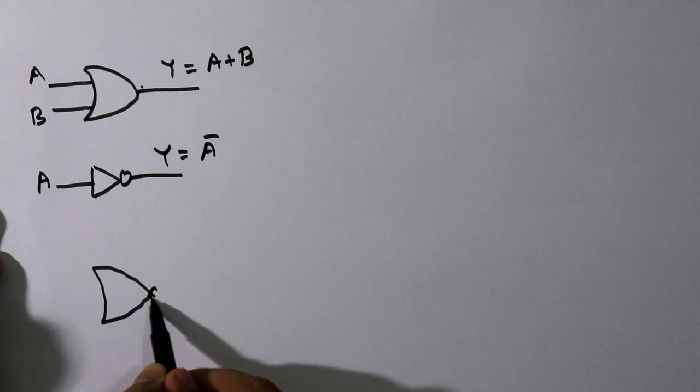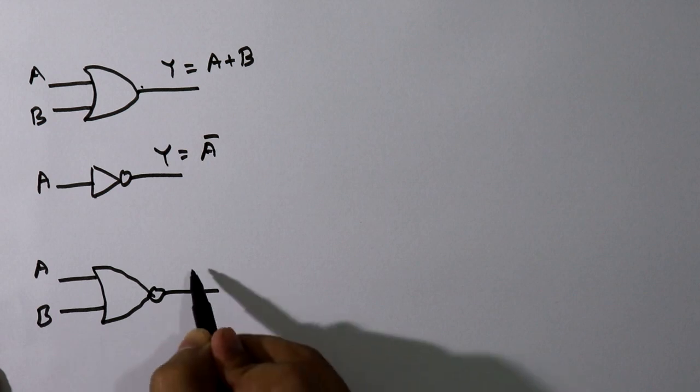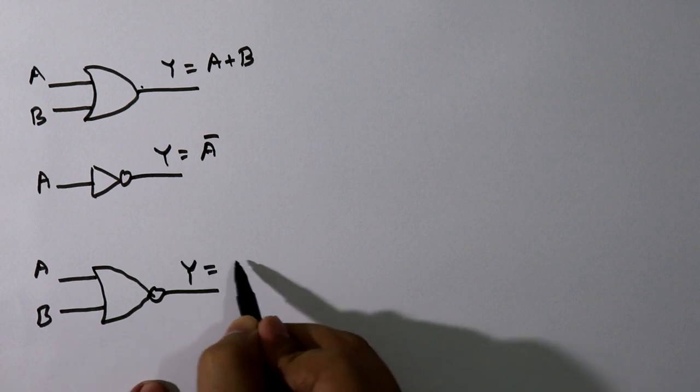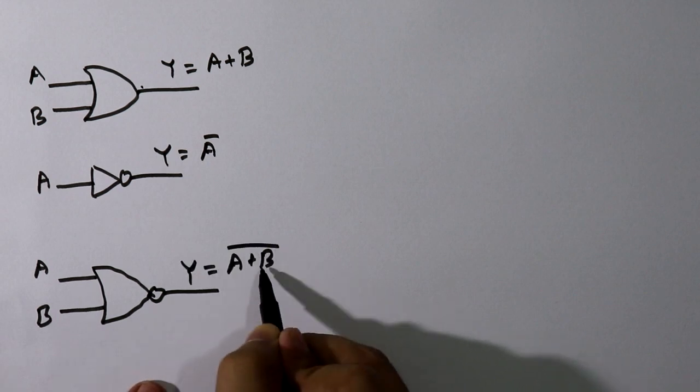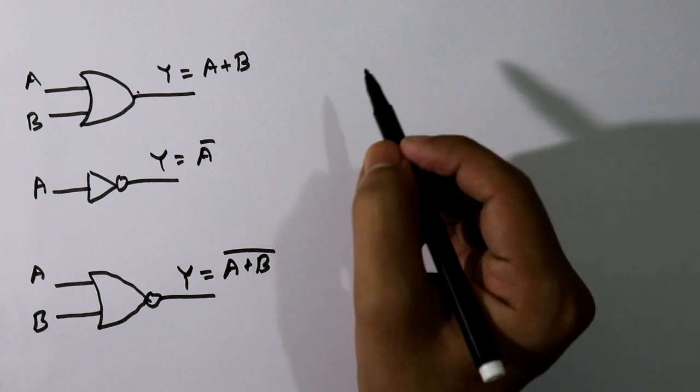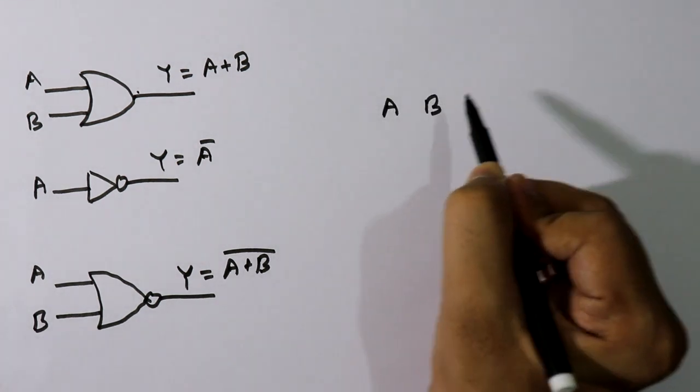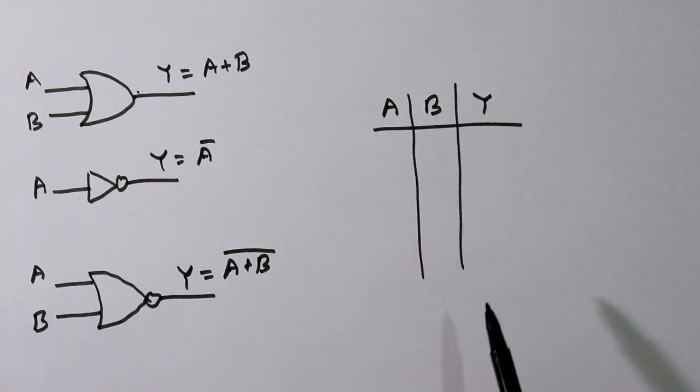This is the symbol of NOR gate. Here it is input A and input B, the output Y equals A plus B complement. Now let's see the truth table of NOR gate. First we have to see truth table of OR gate. Here is input A, input B, and this is output for OR gate.